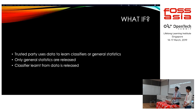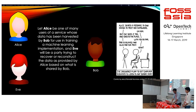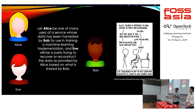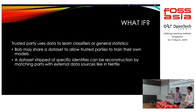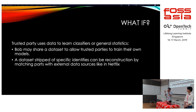Rather than giving out raw data, will these alternatives make things really private? Let's illustrate: Alice is a user, Bob is the deep learning engineer using Alice's data to train his model, and Eve is the party trying to recover or reconstruct the data. In the first case — only allowing a trusted party to use the data — Bob may share a dataset to allow others to train their model, and there is still a possibility of using it with other data to re-identify. This is similar to what happened in the Netflix challenge.